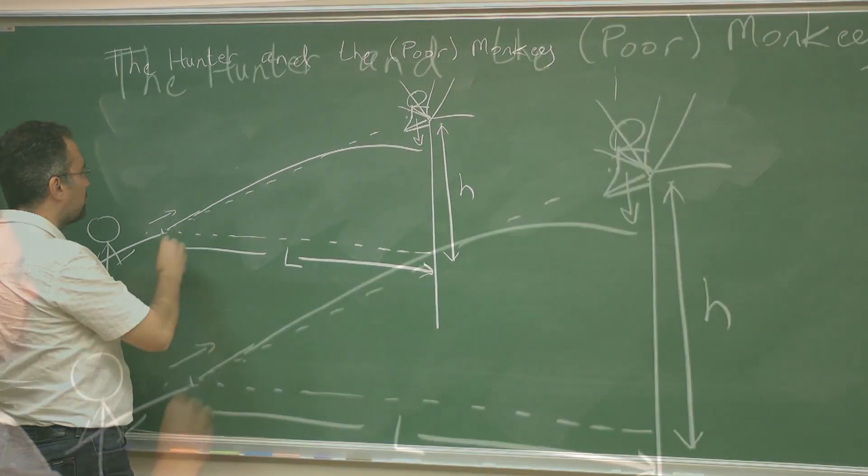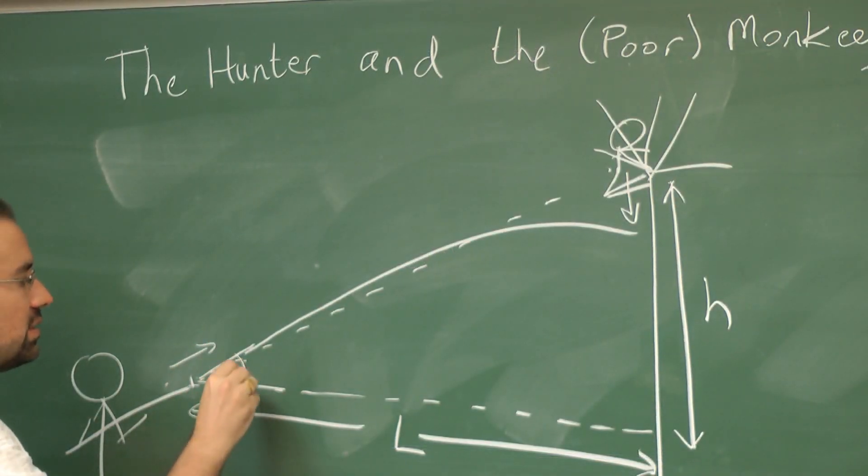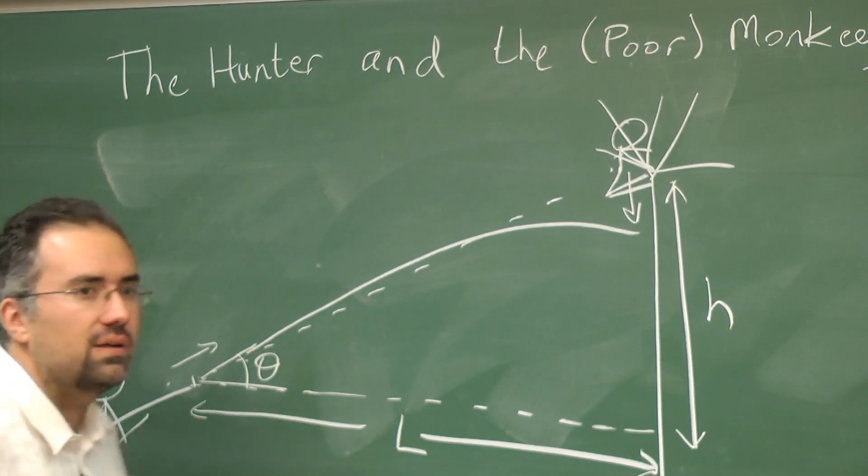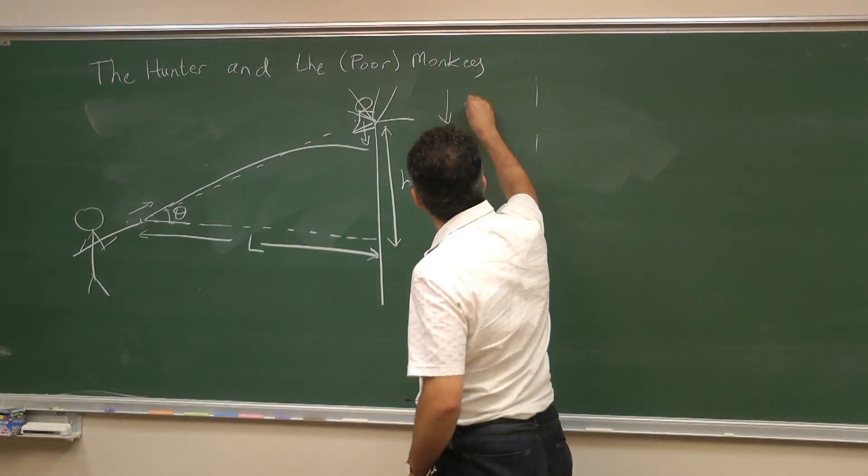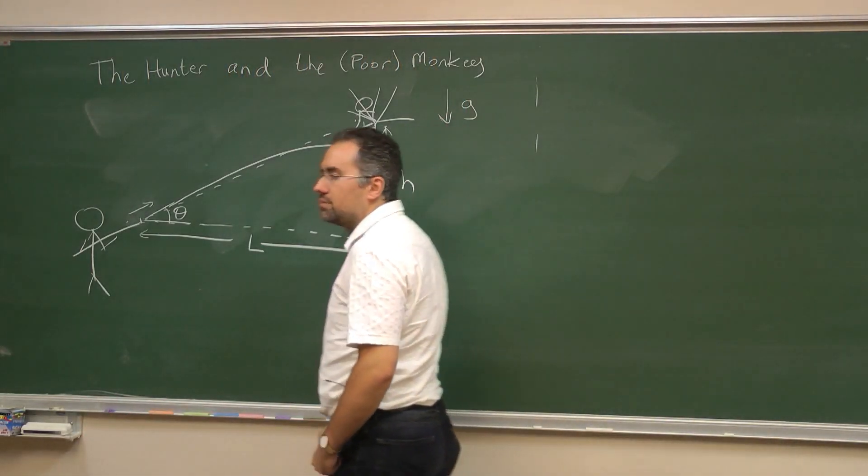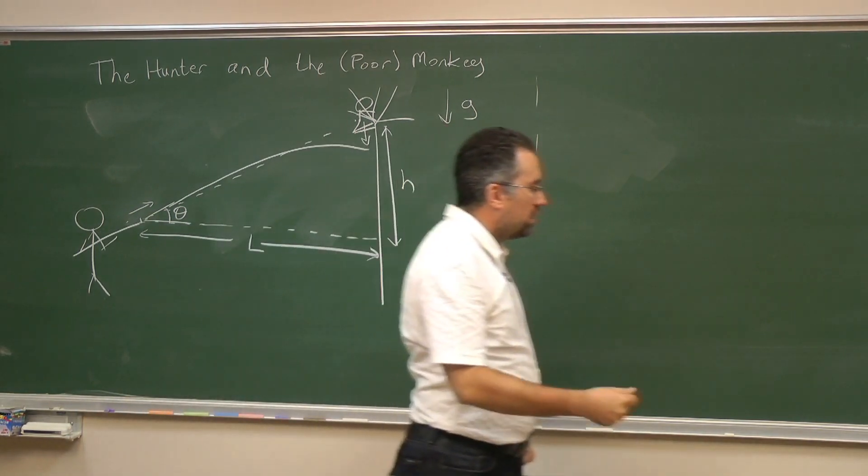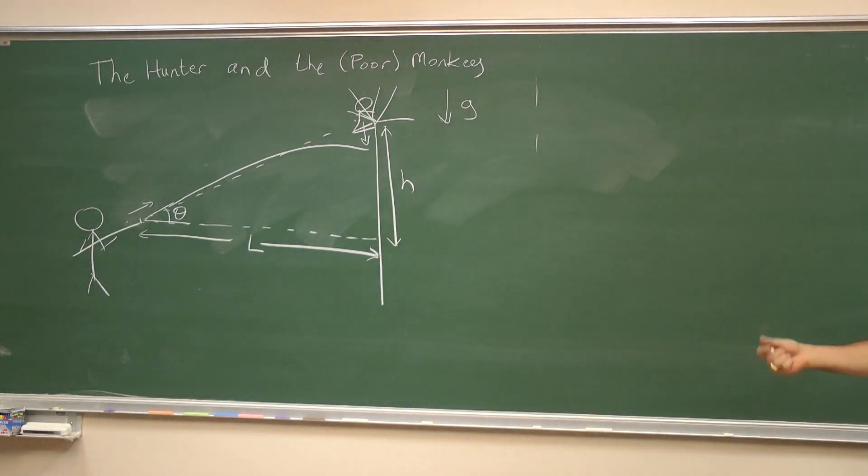Now of course we have a few parameters here. He is aiming, or we can call this angle theta. He is aiming angle theta above the horizontal. Of course that also defines H and L. And of course we have gravity acting downwards, gravitational acceleration g. Now how do we go about solving this problem?